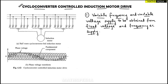So to summarize the first point, the variable frequency and variable voltage supply is obtained from the fixed voltage and fixed frequency AC supply. That is what the cycloconverter does.